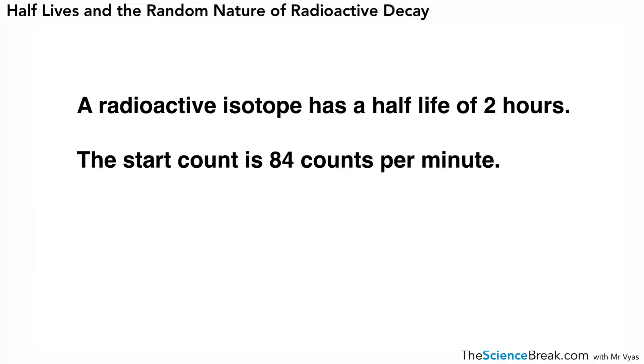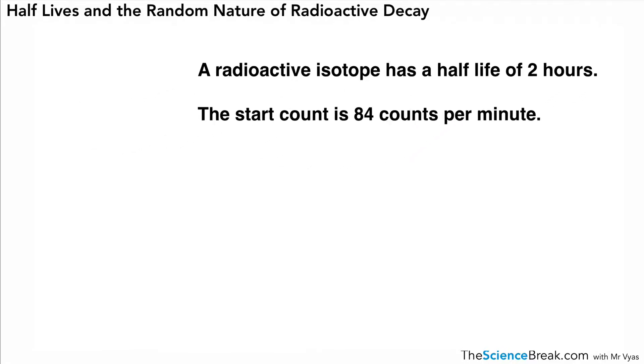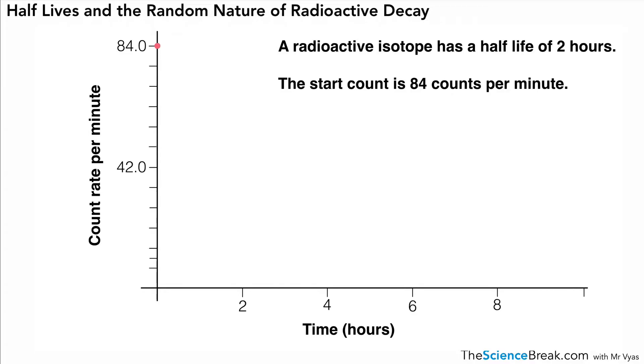Now if we know what the half-life is, we can use two bits of information to draw a half-life curve. A radioactive isotope has a half-life of two hours and the start count is 84 counts per minute. Just from those two bits of information, we can draw a decay curve.